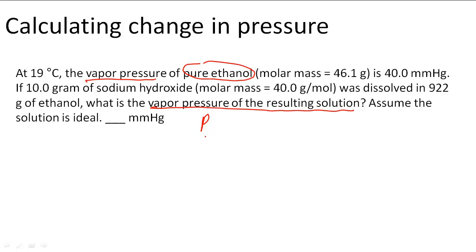So to figure out the pressure at the end which is PA, let's say that PA stands for ethanol. The pressure of ethanol after NaOH has been added equals the mole fraction of A times the initial pressure which is the pure pressure right here of 40.0 mmHg of A. So PA initial equals 40.0 mmHg.